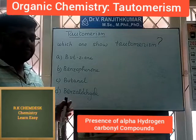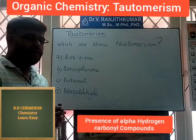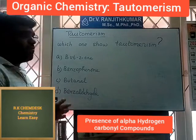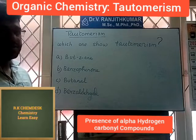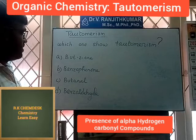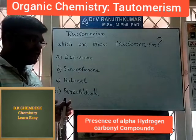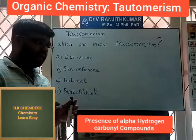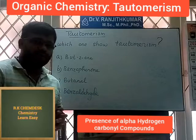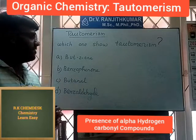Alpha hydrogen is the key condition. Carbonyl compounds show tautomerism, and also some alpha hydrogen-containing nitro compounds show tautomerism.